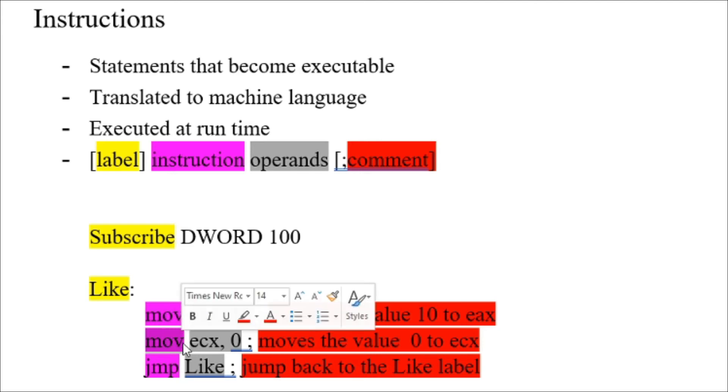Next are operands. Operands are basically the function parameters of the instruction. They can have between zero to three operands usually. They can be a register or a constant or whatever. Examples of operands here are eax, 10, ecx, 0, and Like.